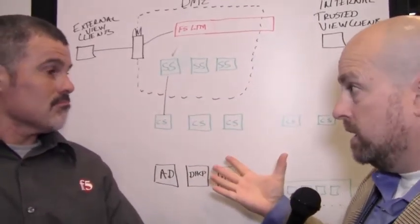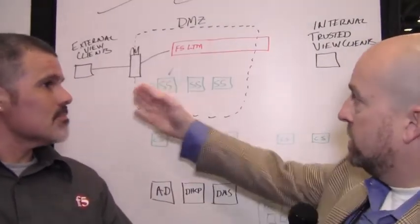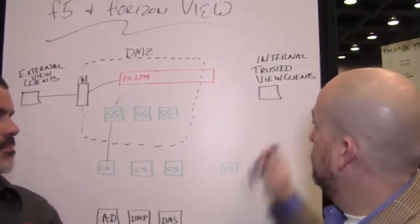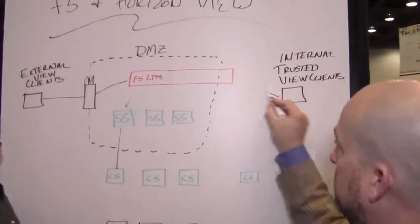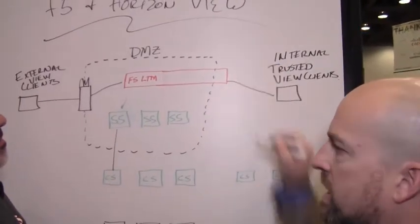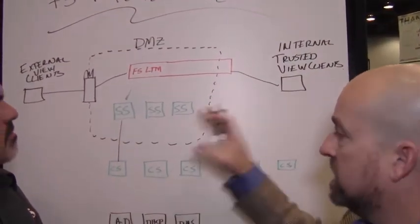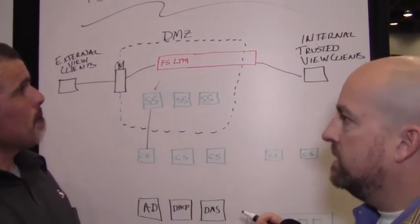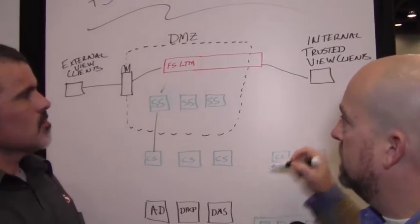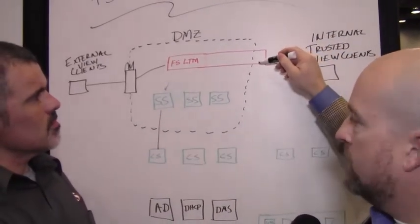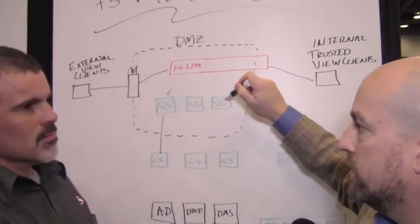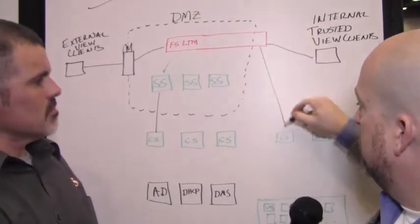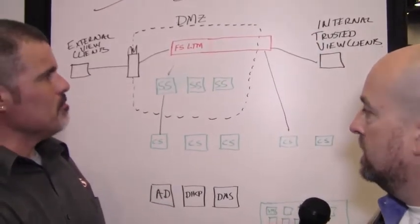The other thing the security server does is it proxies the PC-over-IP protocol. It's a secure gateway - traffic that comes in, it decrypts it at the security server, passes it through and re-encrypts it. Internal clients in this situation would usually come from internal, they'd hit the very same LTM. The LTM has an interface on the internal network as well, so it spans the DMZ.